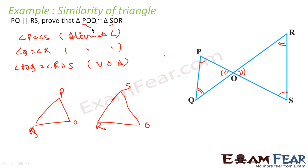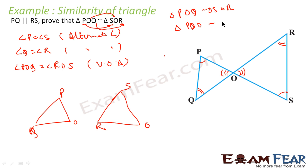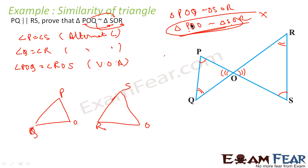P is equal to S, O is equal to O, and Q is equal to R. Now I can say POQ is similar to SOR. But I cannot say that PQO is similar to triangle SOR, because in that case P should be equal to S, Q should be equal to O, and R should be equal to O — which is not the case. So the best way is to draw two triangles if you want to prove that two triangles are similar.